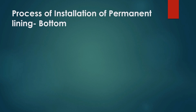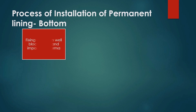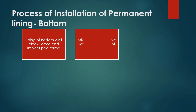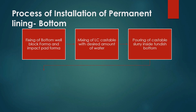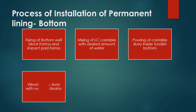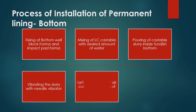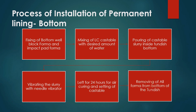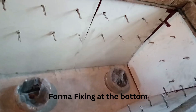Let's see the process of installation of permanent lining. Casting is first done at the bottom. Step one: fixing of bottom well block forma and impact pad forma. Step two: mixing of LC castable with the desired amount of water — mostly 7 to 8 percent. Step three: pouring of castable slurry inside the tundish bottom. Step four: vibrating the slurry with a needle vibrator to maintain uniformity. Step five: after completion of casting, it is left for at least 24 hours for air setting or air curing.